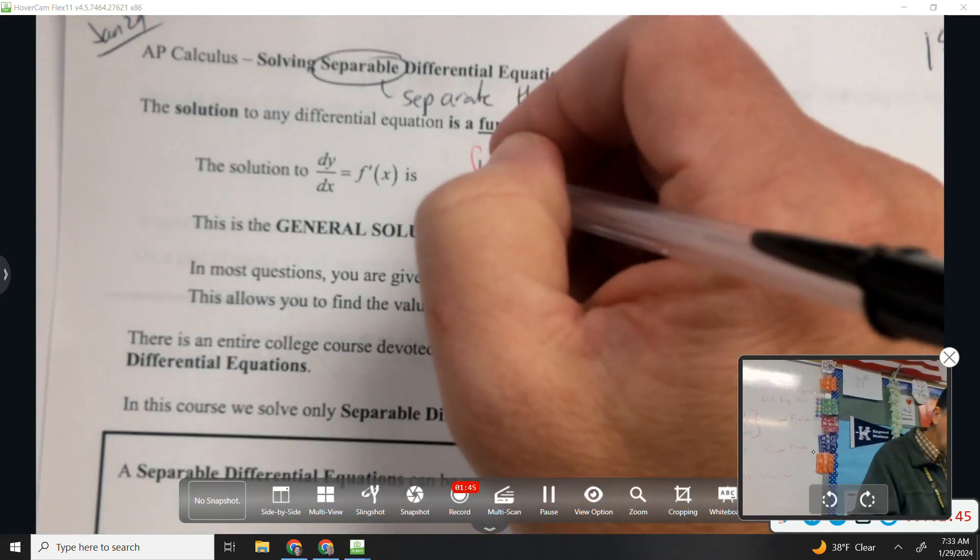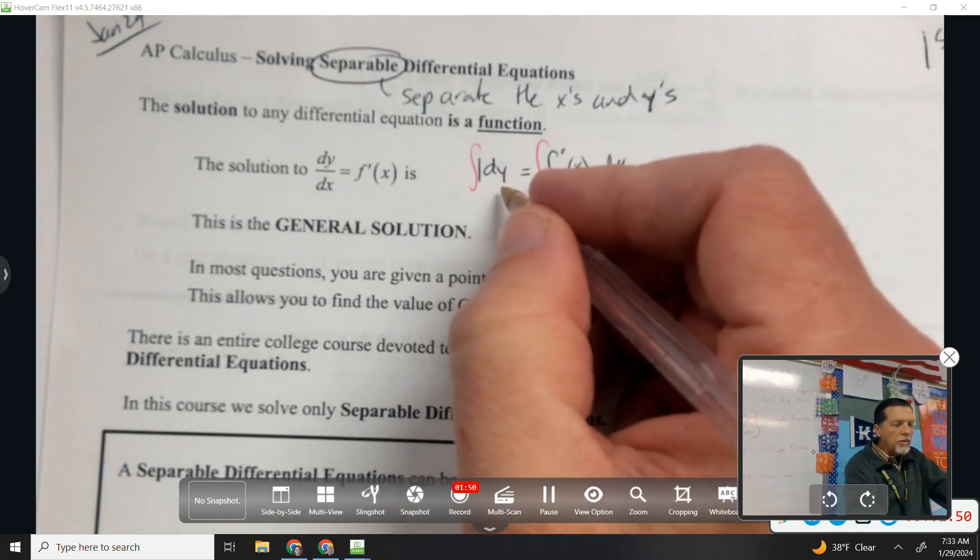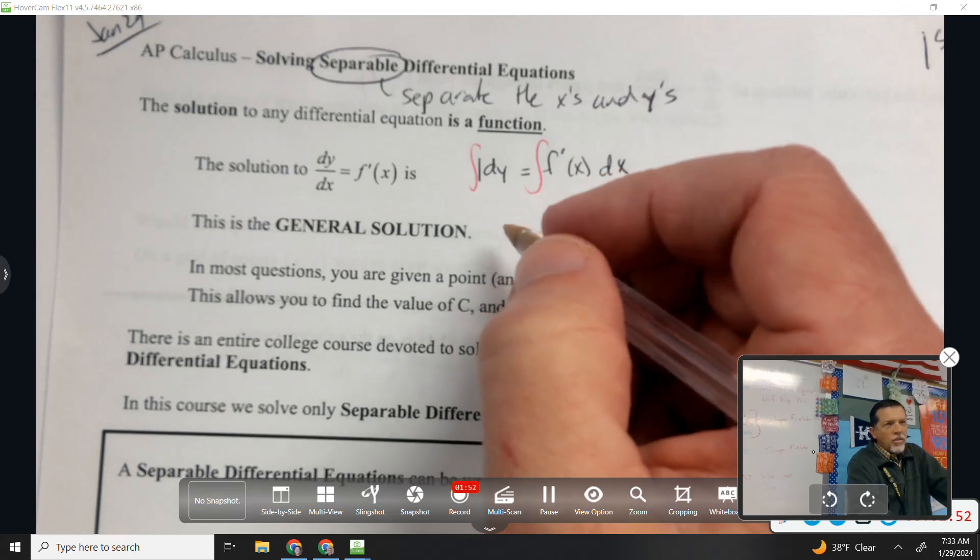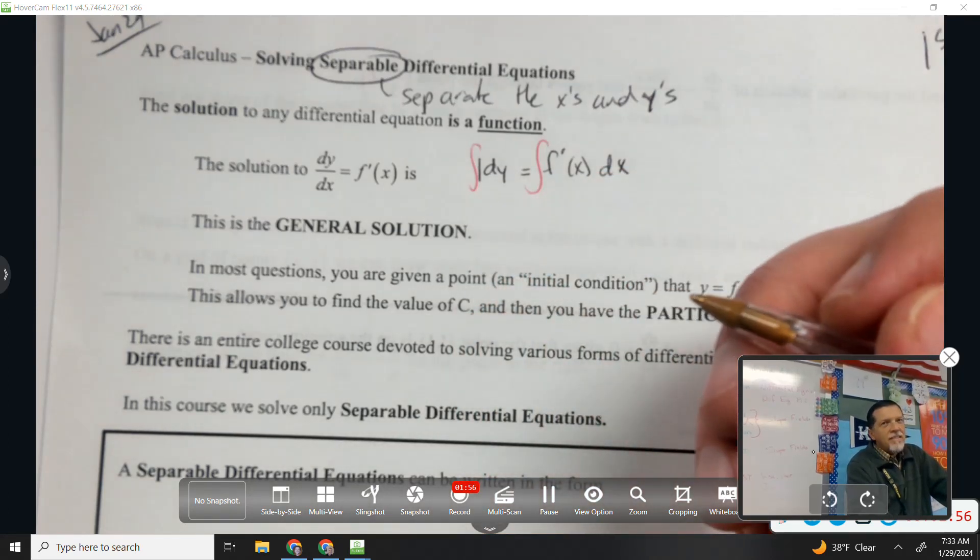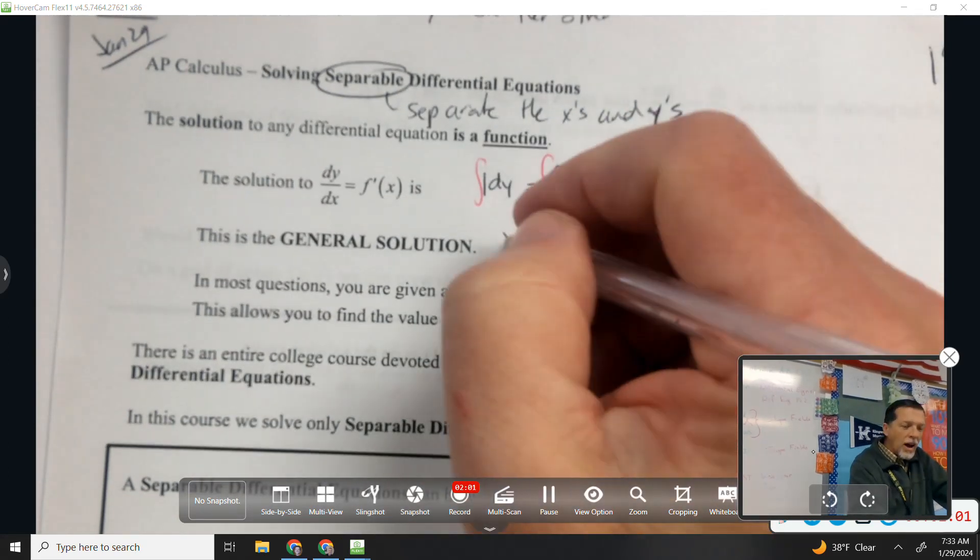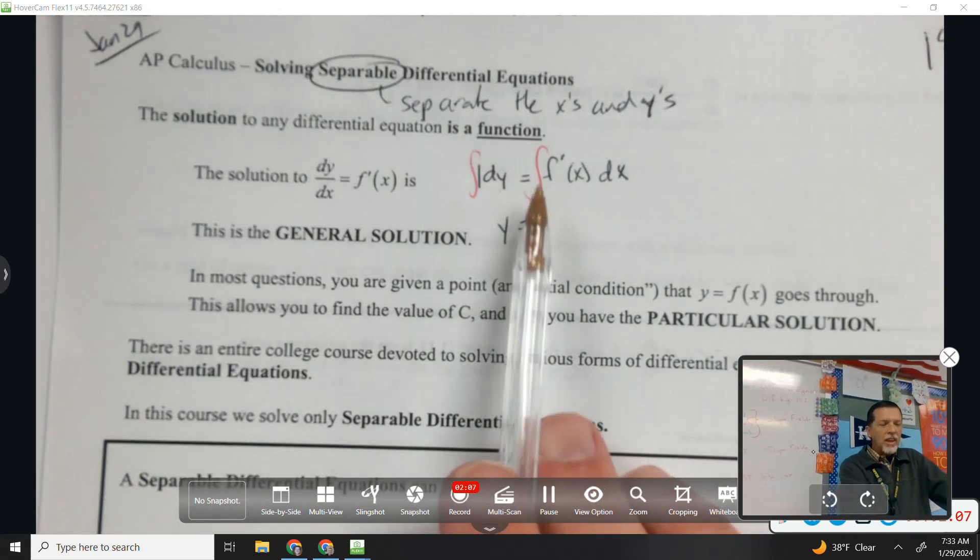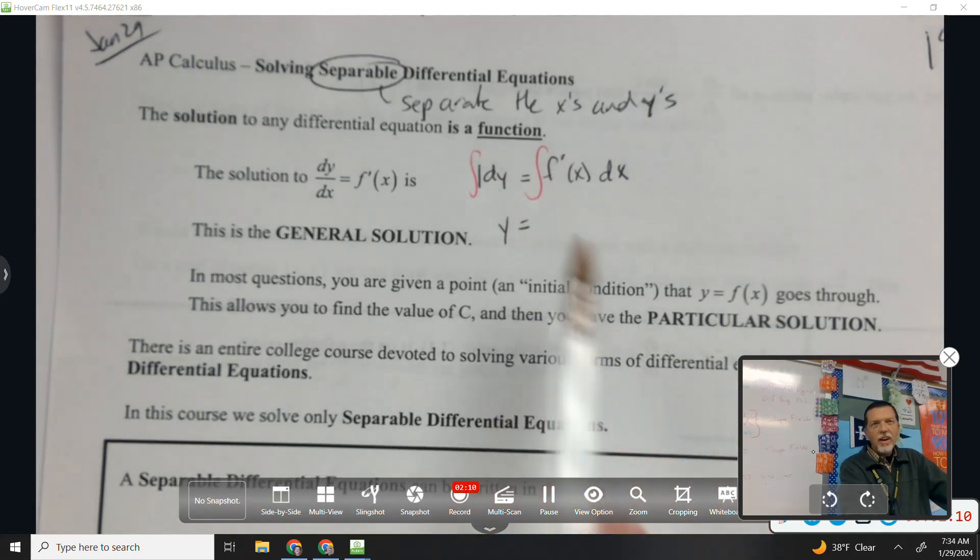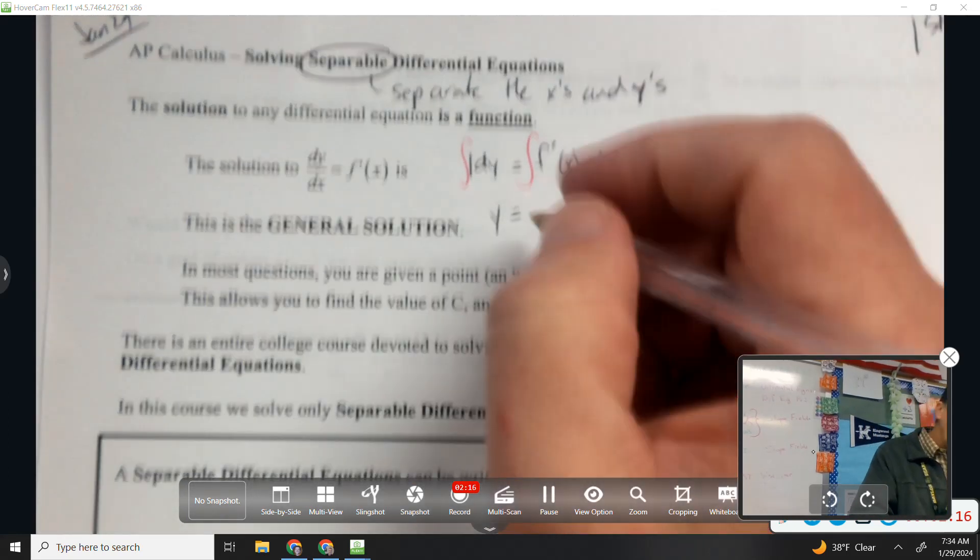There's an invisible one there if you want there to be. So the anti-derivative of 1 dy, what would that be? Be careful, x or y, but since we're talking about y's, let's make it y. And then on the right hand side, what's the anti-derivative of the derivative of f? Just f(x), the anti-derivative of the derivative cancels each other out.